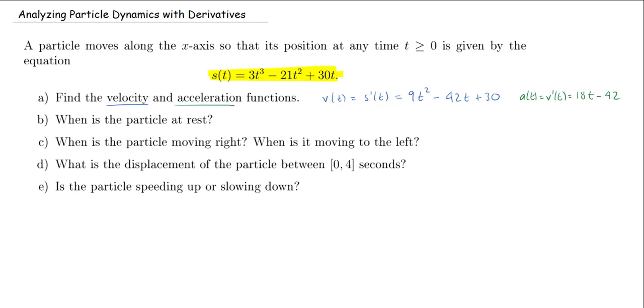Next question, when is the particle at rest? Well, we know the particle is at rest, that means it's not moving. If it's not moving, then the velocity is 0. So this occurs when the velocity is equal to 0. We know the velocity is given by 9t squared minus 42t plus 30.